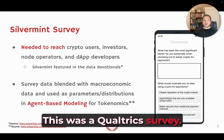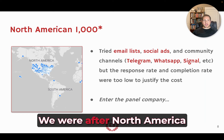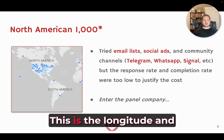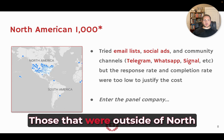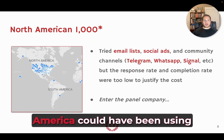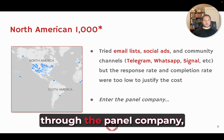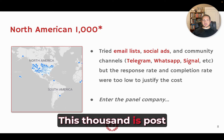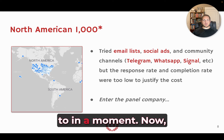This was a Qualtrics survey — you can see some of it on the screen. We were after North America almost exclusively, and this is the longitude and latitude data of the survey takers. Almost all of it was in North America. Those outside could have been using VPNs or gotten through the panel company, but we were pretty thorough. This thousand is post-purge, which I'll get to in a moment.